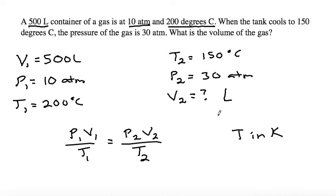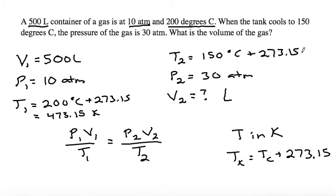So in order to convert our temperatures, we need to use the formula that temperature in Kelvin is equal to temperature in Celsius plus 273.15. And so now we can add 273.15 to our temperatures to get them in Kelvin. So 200 plus 273.15 is equal to 473.15 Kelvin, and 150 degrees C plus 273.15 is 423.15 Kelvin.